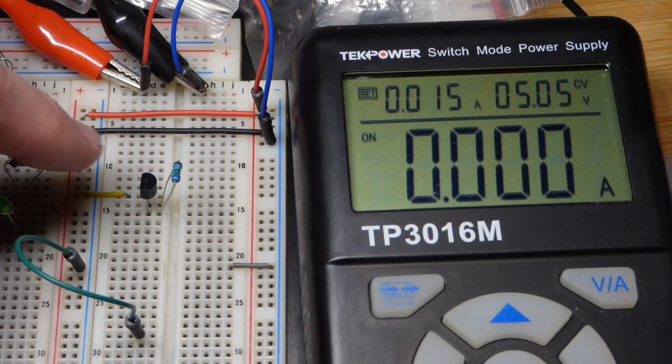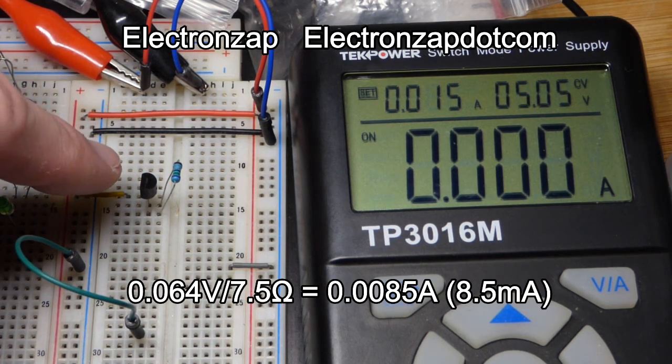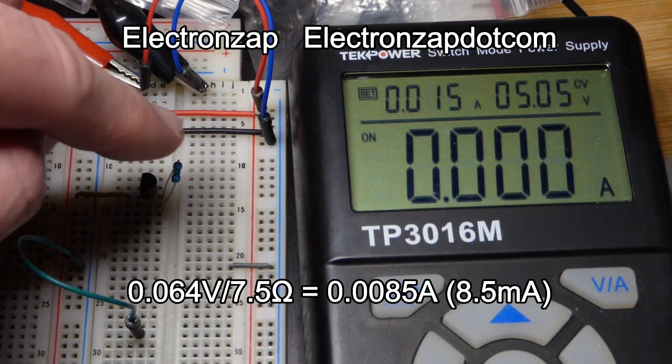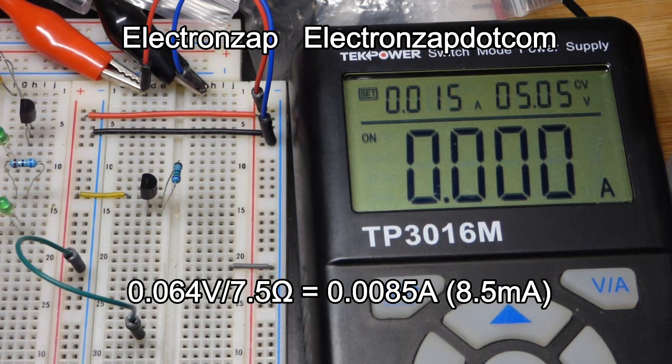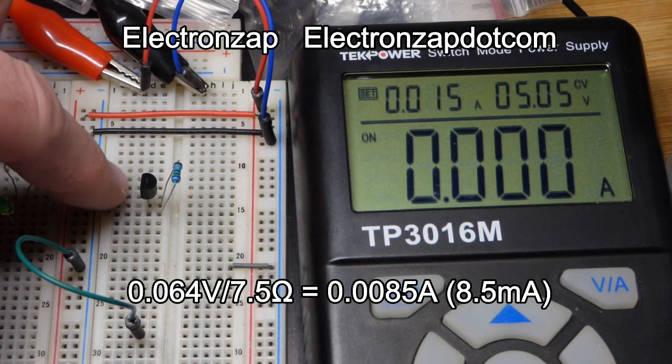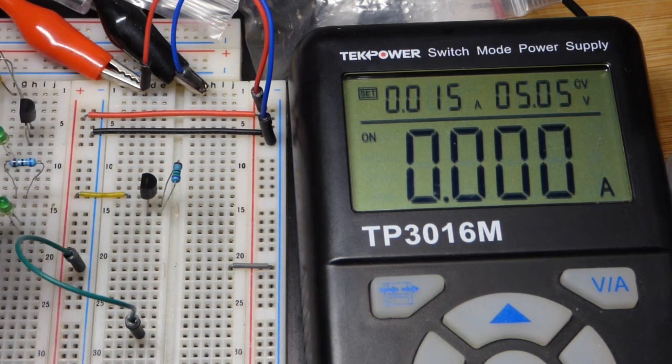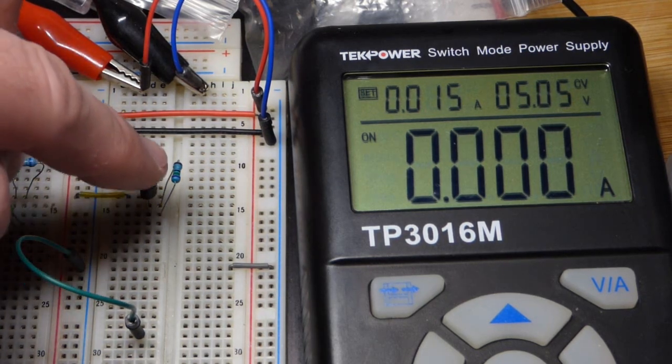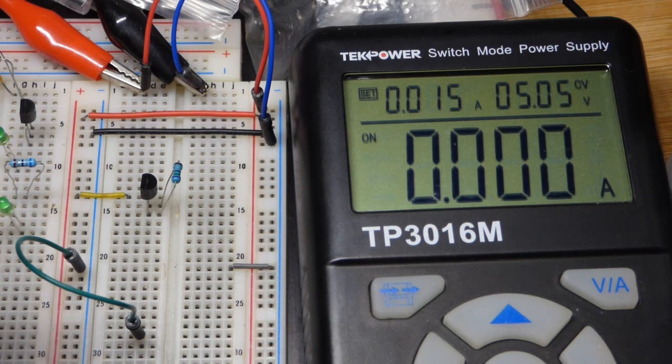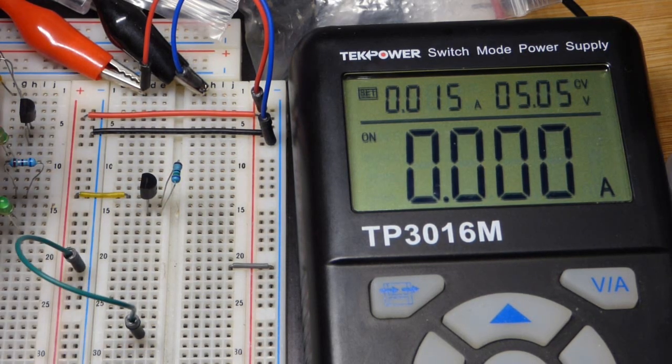So that current that we set, that's 64 millivolts according to the data sheet divided by the resistance will give you the amount of current. This can only go up to 10 milliamps of current though. So don't use a resistor lower value than 6.8 ohms.